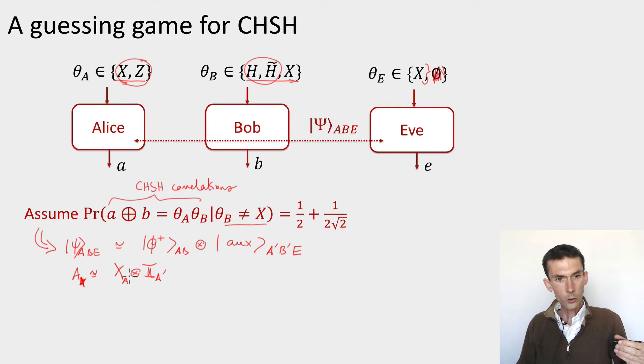Because what is this telling us already, it's telling us that when Alice performs this measurement, two things. First of all, because this is a Pauli X performed on half of an EPR pair, the output is going to be uniformly distributed. So, the probability that this A is equal to zero, conditioned on Alice's input theta A being equal to X, it's going to be exactly a half. And now,